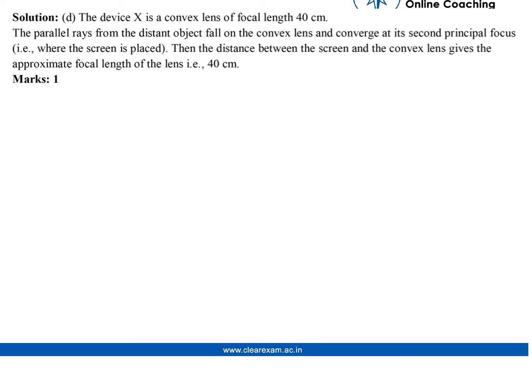As the parallel rays from the distant object fall on the convex lens and converge at its second principal focus, that is, where the screen is placed. Then the distance between the screen and the convex lens gives the approximate focal length of the lens, that is 40 cm. Thank you.